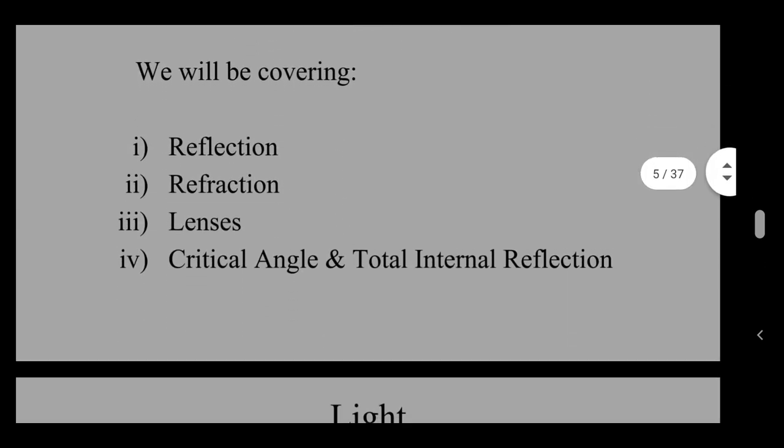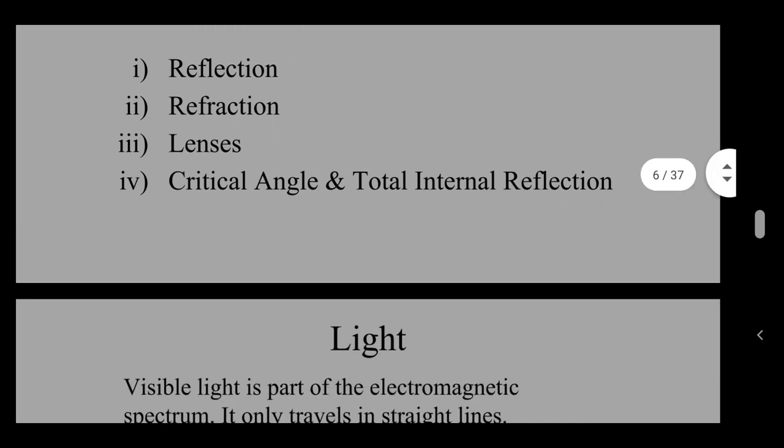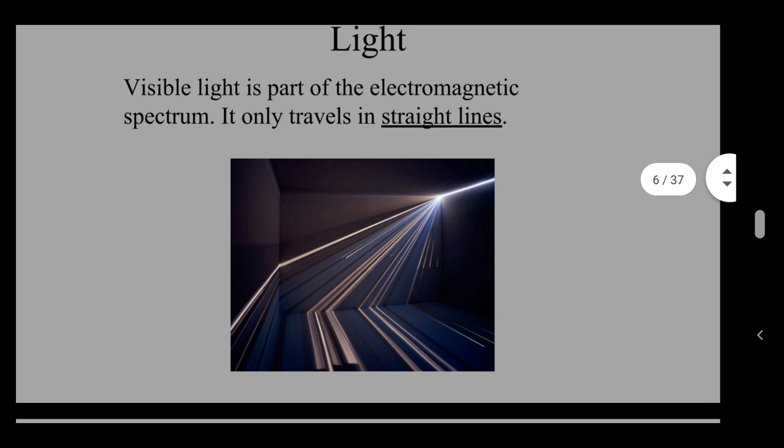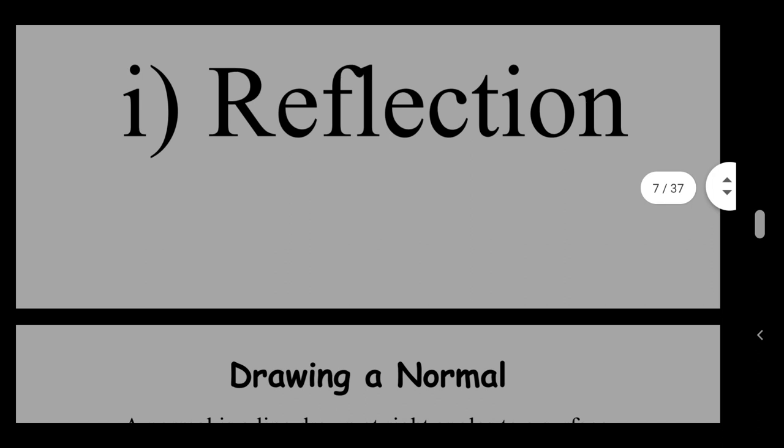Now, today's work is going to talk about reflection, refraction, lenses, critical angle, and total internal reflection. Things that you may have forgotten about since the beginning of S3. So, we know that light can travel only in straight lines. It can only travel in straight lines and if you're a fancy pants, then you may say something about gravitational lensing. But in this National Five course, we talk about light moving in straight lines.